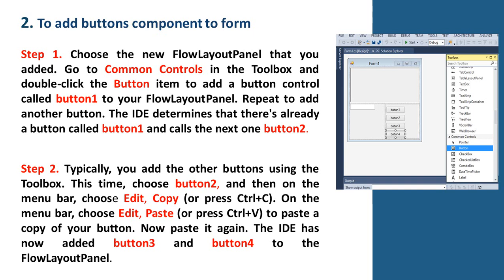Now to add button components to the form. Step 1: Choose the new flow layout panel that you added. Go to Common Controls in the toolbox and double-click the Button item to add a button control called Button1 to your flow layout panel. Repeat to add another button. The IDE determines that there is already a button called Button1 and calls the next one Button2.